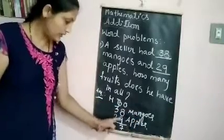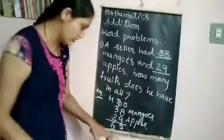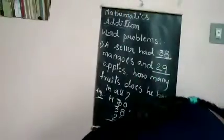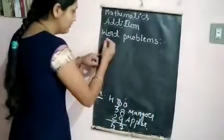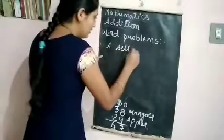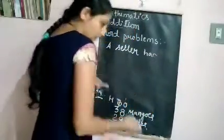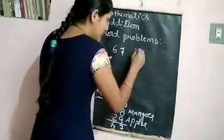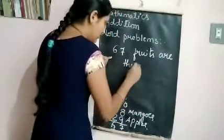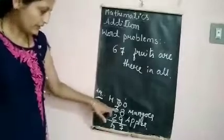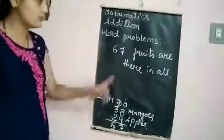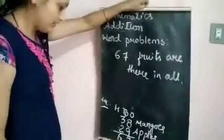So, 38 mangoes and 29 apples — altogether, how many fruits are there? 67 fruits. You have to write the final answer in a sentence: '67 fruits are there in all.' There were 38 mangoes and 29 apples; altogether, 67 fruits are there in all.